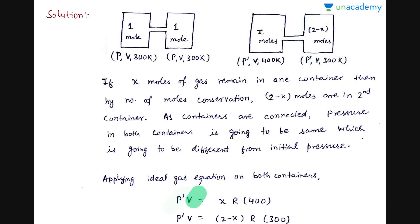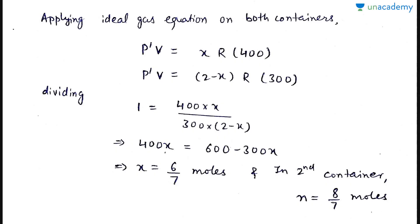So for this we will apply ideal gas equation separately, for this we will apply ideal gas equation separately, and both have same pressure, same volume, different temperature, so we will solve those two equations. So here ideal gas equation will be P dash V, P dash is pressure at this point, times volume, is equal to number of moles x times R times its temperature 400. For the second one equation will be P dash V equals 2 minus x, because number of moles is 2 minus x, times R times 300. P dash V is common in both, so this should be equal to this. We put that, solved it, and you got x to be 6 by 7 moles. So, if in the first one there's 6 by 7 moles, then in second there will be 2 minus 6 by 7, which is 8 by 7 moles.